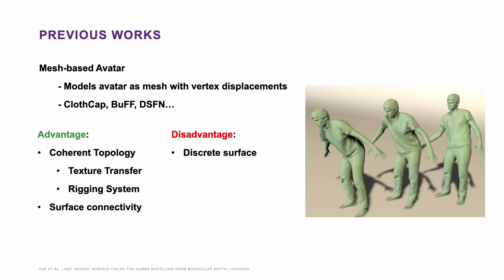In prior related works, people use a body template and add vertex displacement to model the clothed deformation. Their obtained models enjoy a coherent topology, which is good for sharing properties like textures and rigging systems, making them easy to incorporate in computer graphics pipelines. However, their discretization is not flexible — properties are defined only on vertices, which limits their scalability.